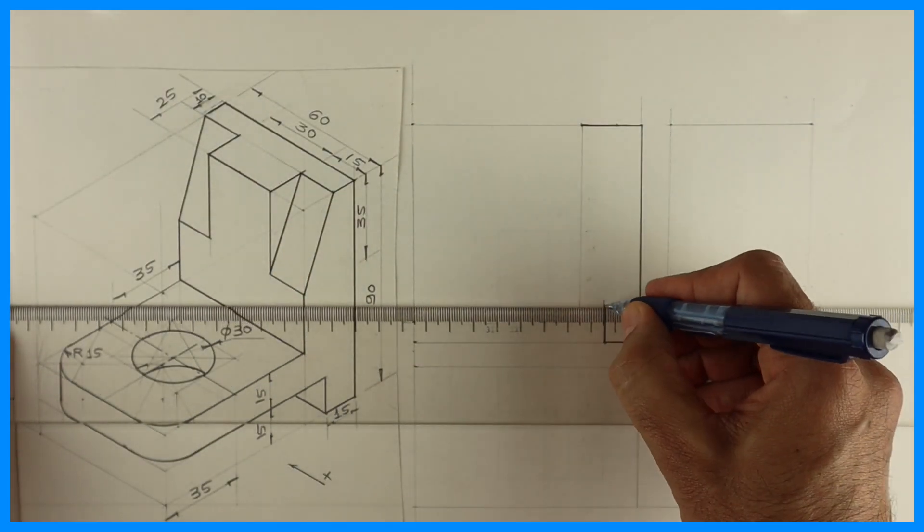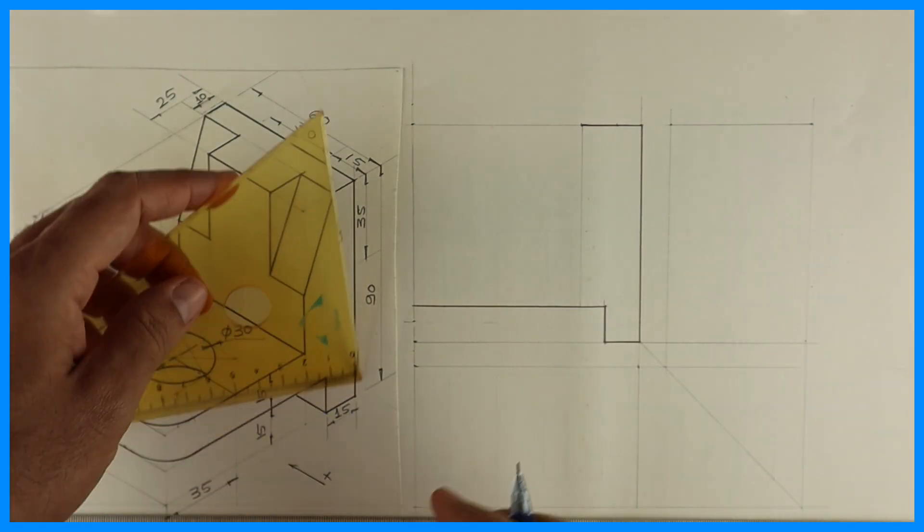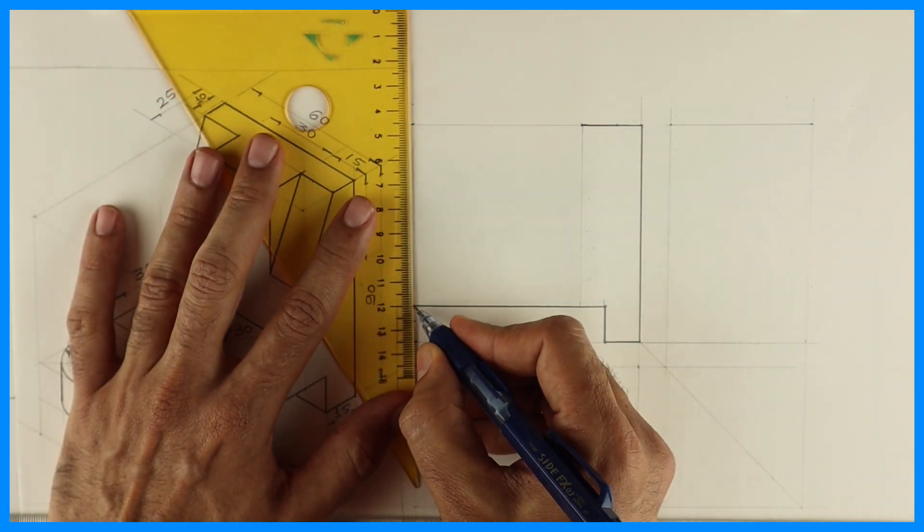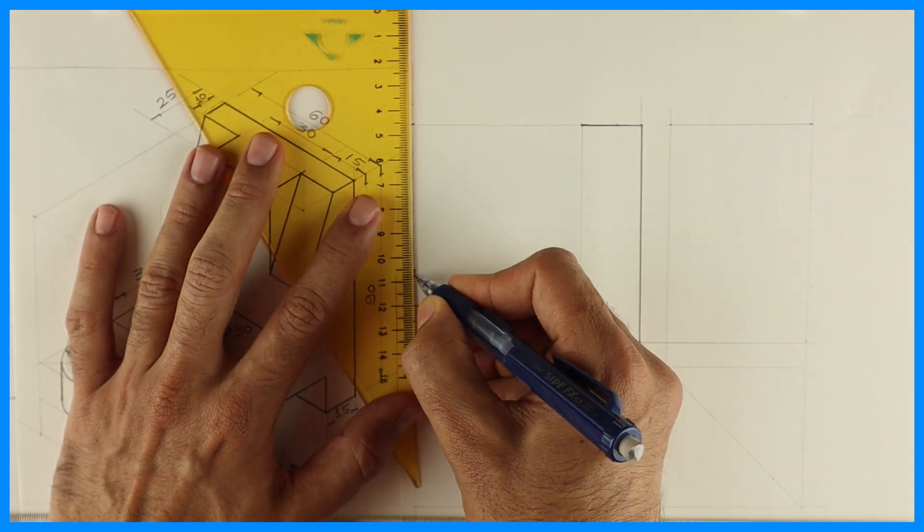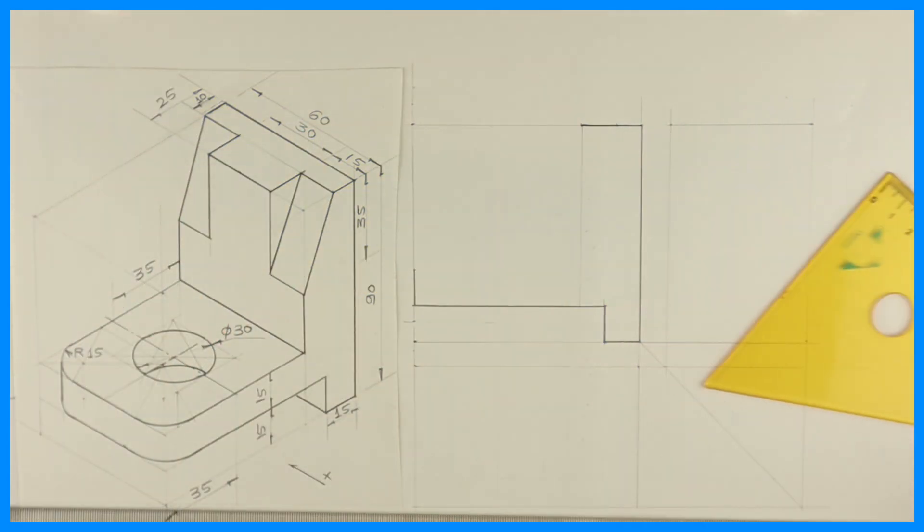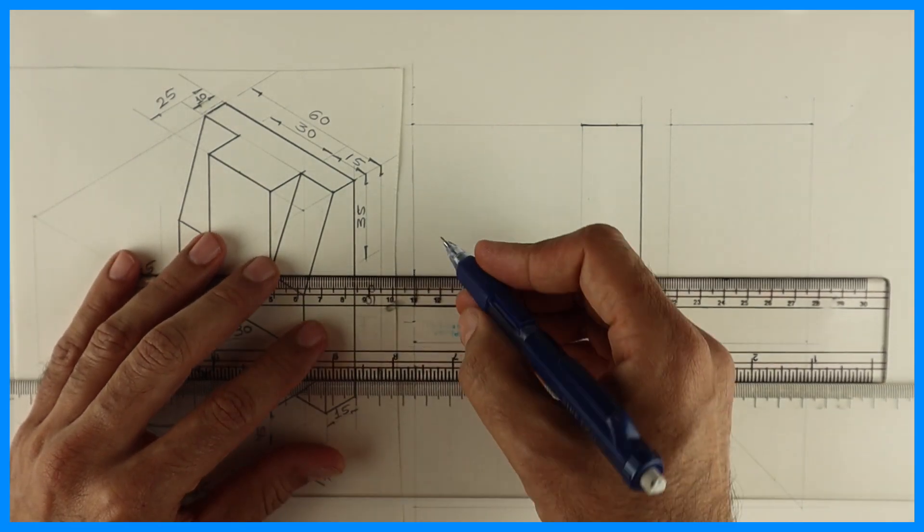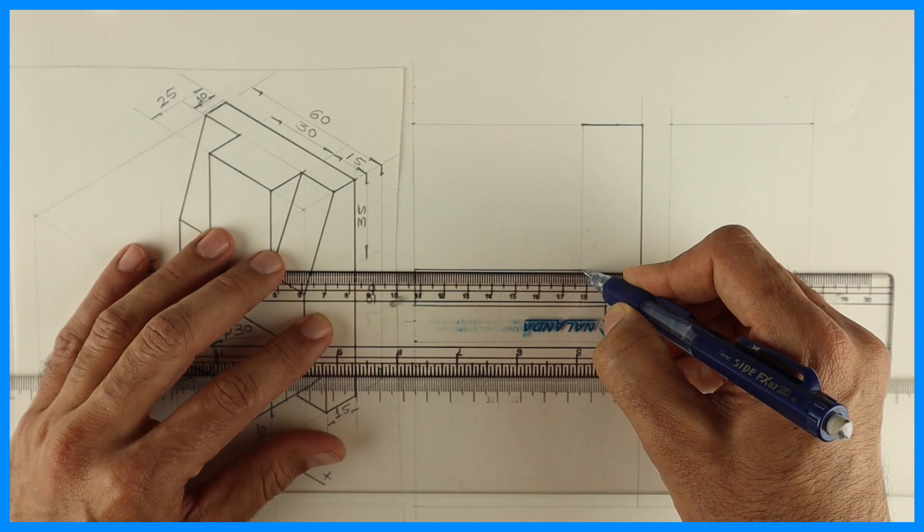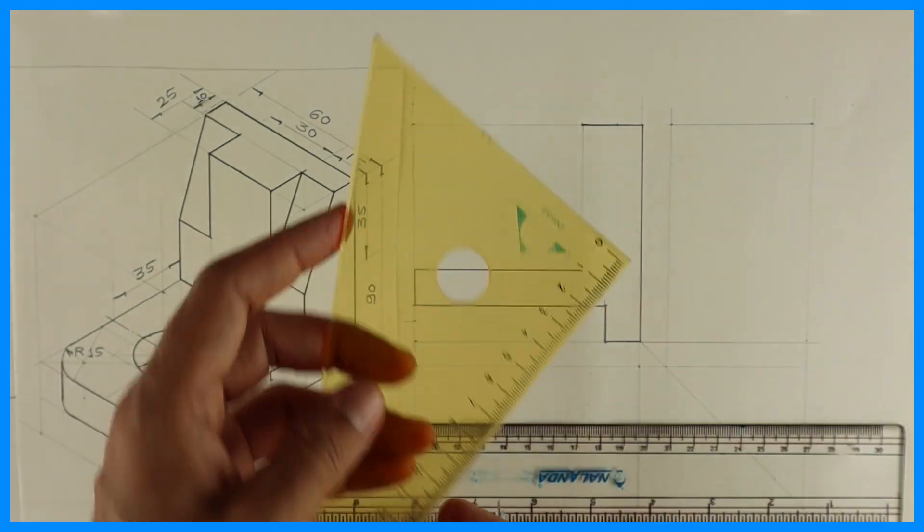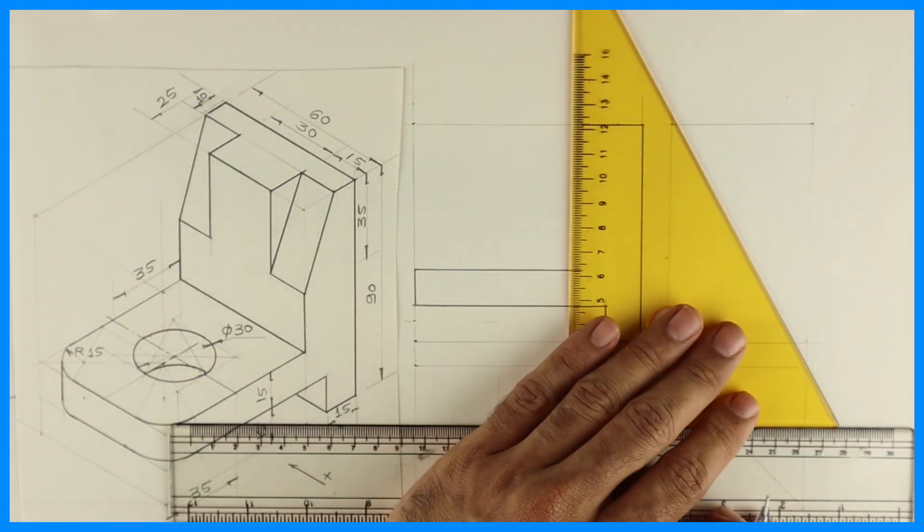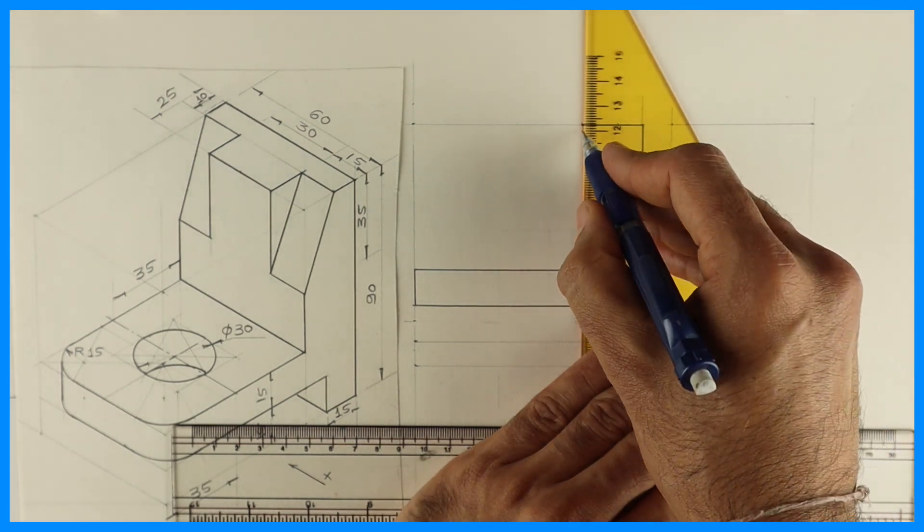Then we'll draw horizontal line. We'll draw vertical line from here 15 and we'll draw straight line from here.